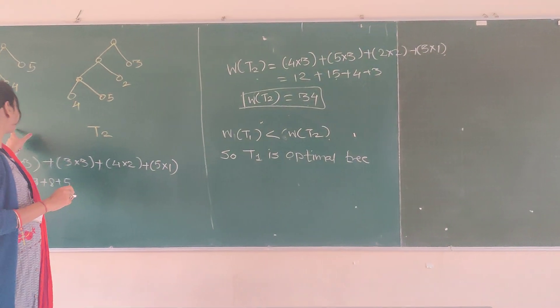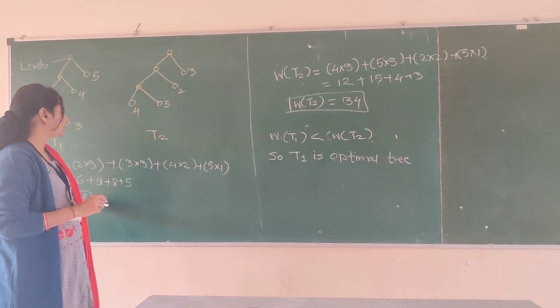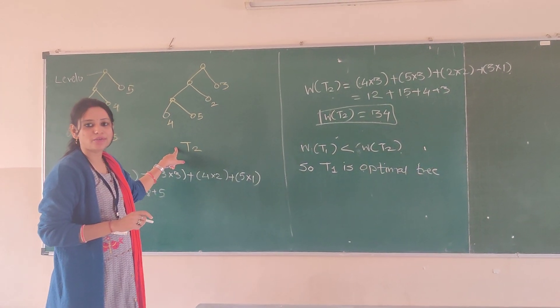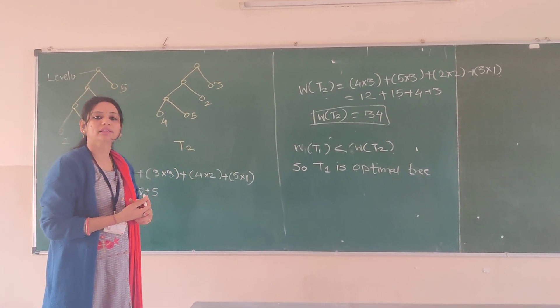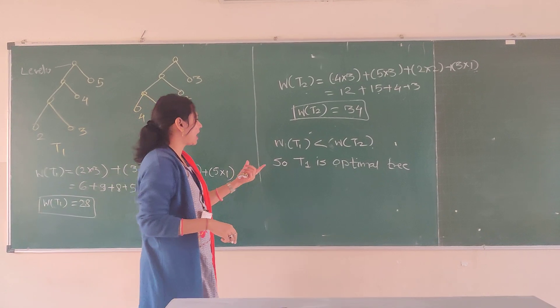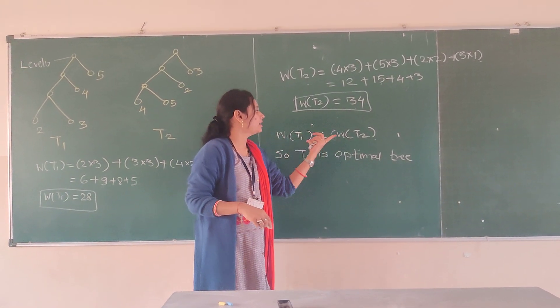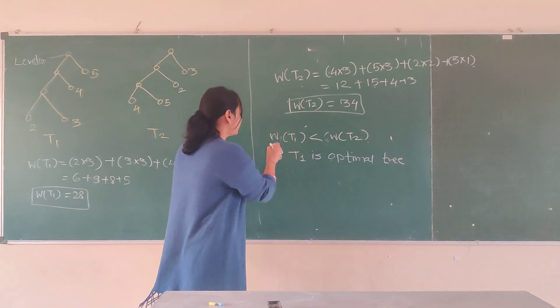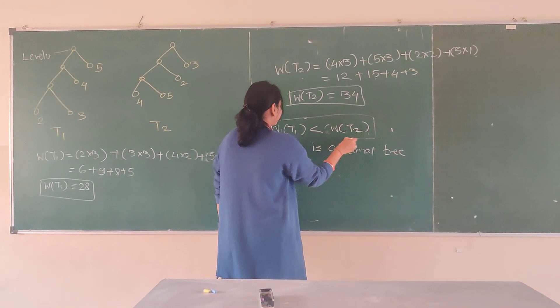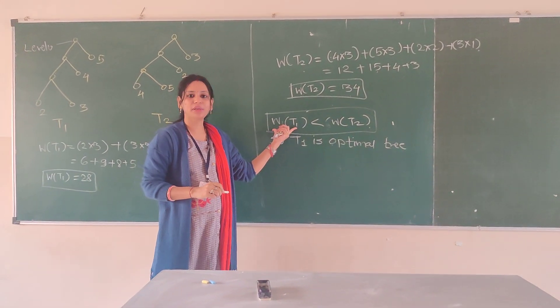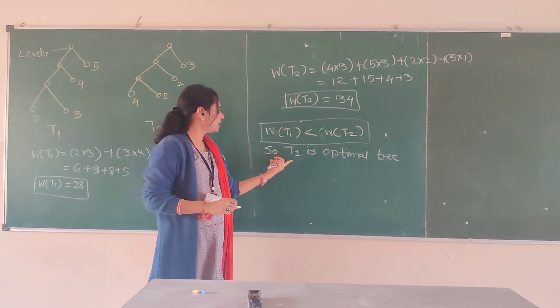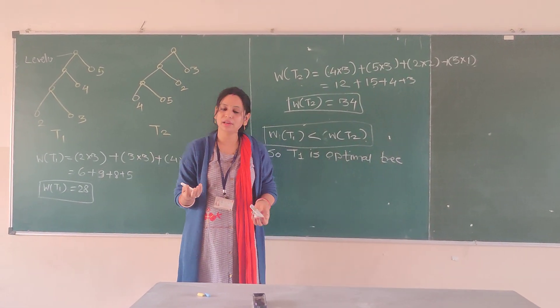The weight of first tree is 28. The weight of second tree is 34. That means we can say that the weight of T1 is smaller than weight of T2. Now, as the weight of T1 is the smaller, that is why T1 is called as optimal tree.